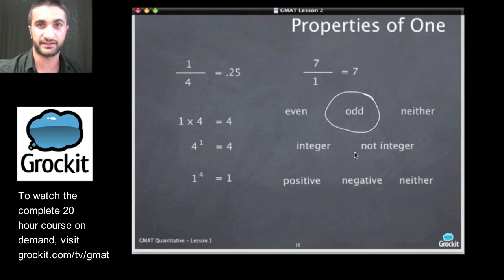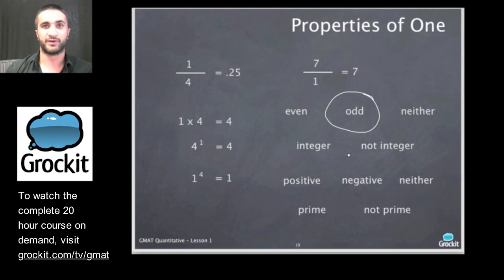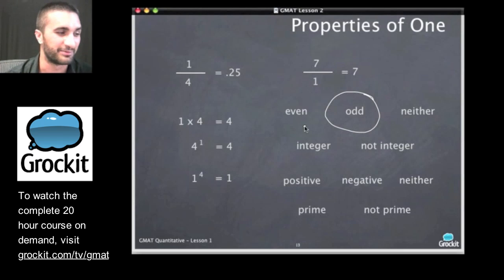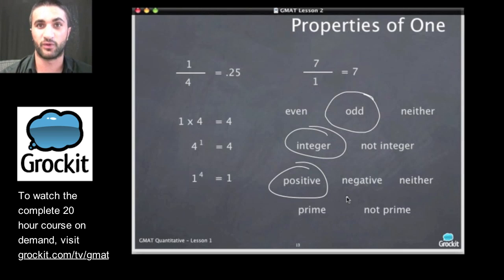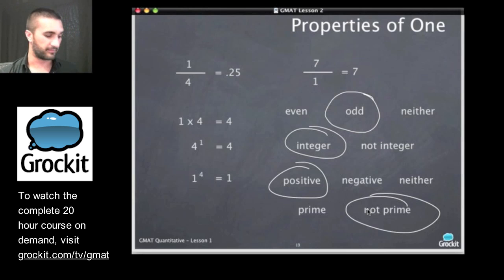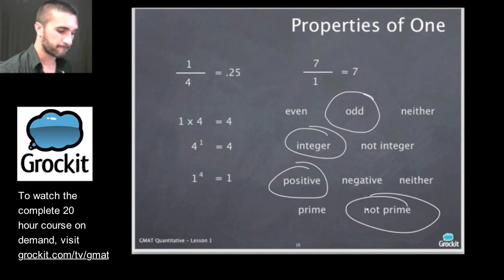Is it an integer or not an integer? Is it positive, negative, or neither? And is it prime or not prime? We gave away one of these answers just a couple of minutes ago. It's an integer. It is positive. Negative one is negative. And it is not a prime number. Great.